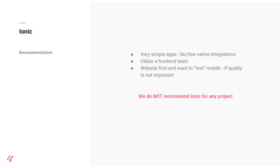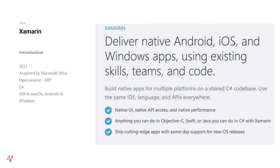Next is Xamarin. This is a company that saw the hybrid opportunity really early and was clever about it. They decided to port the entire SDK — all the APIs to communicate with iOS and Android — into C#, which is a really strong language. When Microsoft started having tough times getting their own platform running, they acquired Xamarin, which was a good business outcome for them.